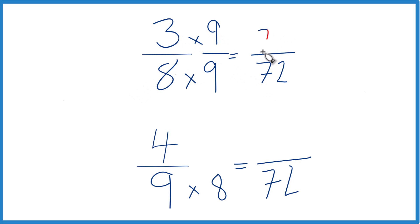3 times 9, that's 27. Down here, we multiplied 9 times 8, so let's multiply 4 by 8. 4 times 8 is 32.